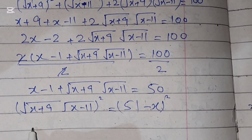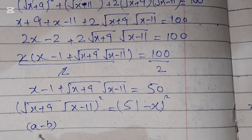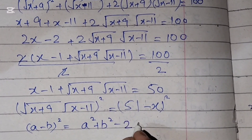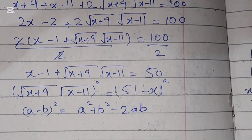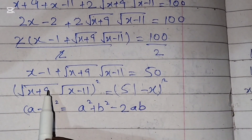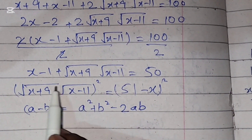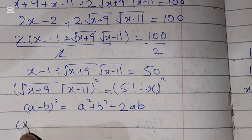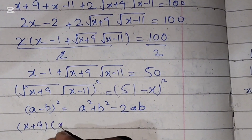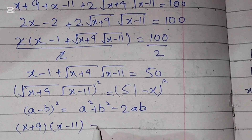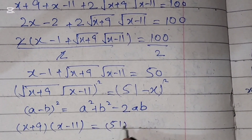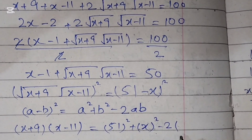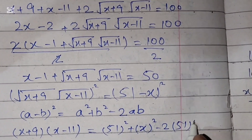For the right-hand side, we use (a - b)² = a² + b² - 2ab. The square cancels the square root on the left, giving: (x + 9)(x - 11) equals 51² + x² - 2 times 51 times x.